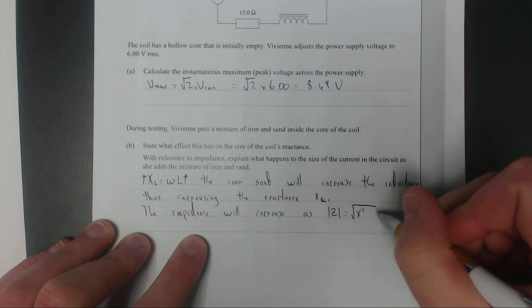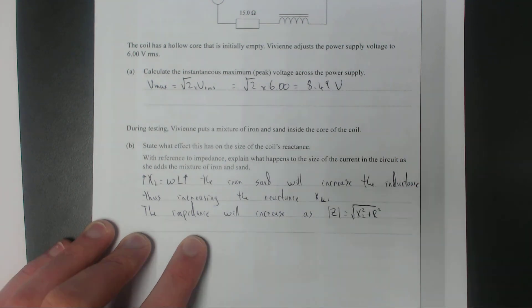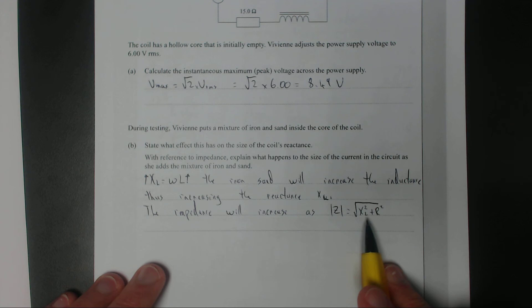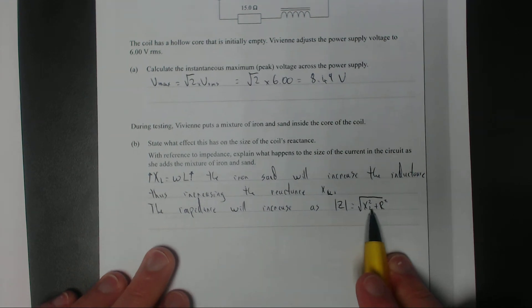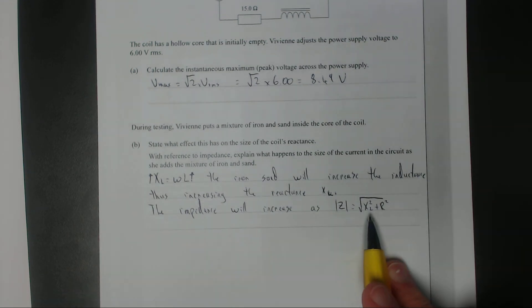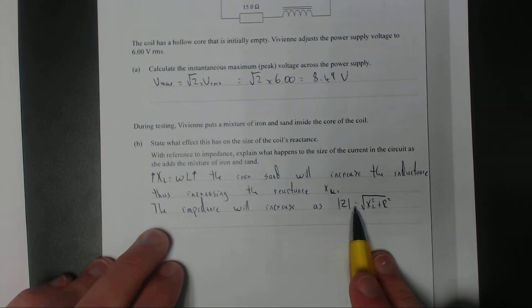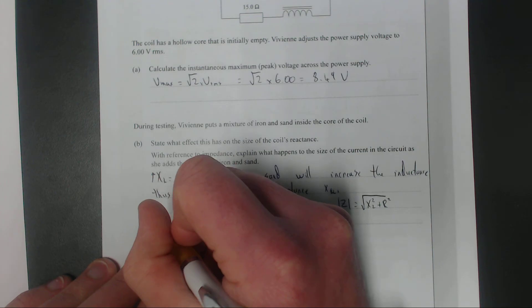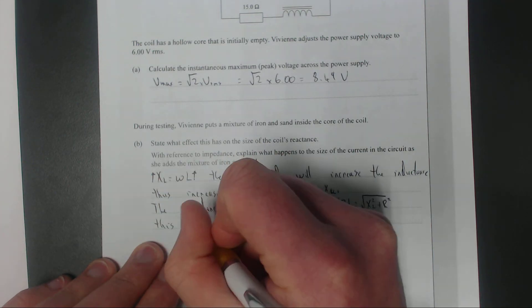If you increase the reactance of the inductor, the total impedance of the circuit will increase. This will decrease the current flowing.